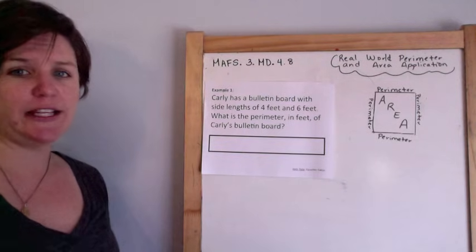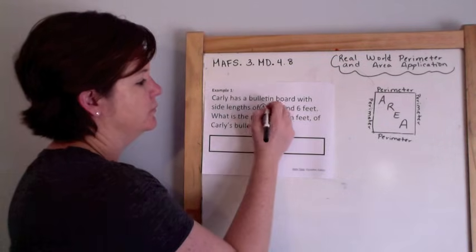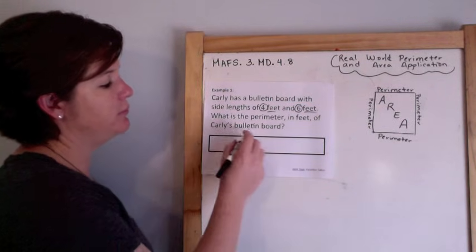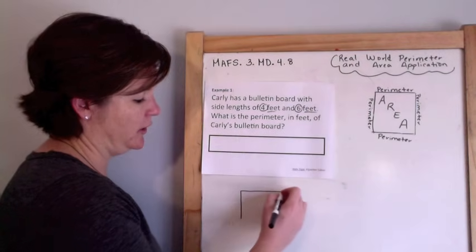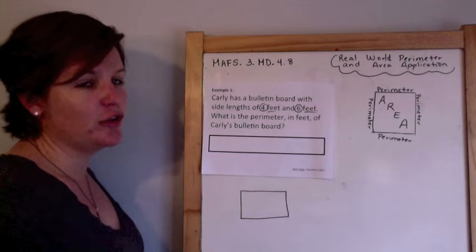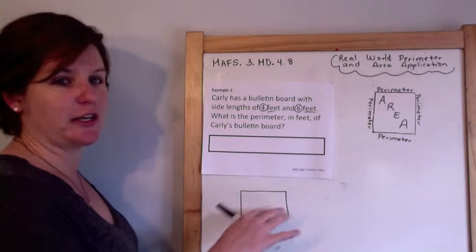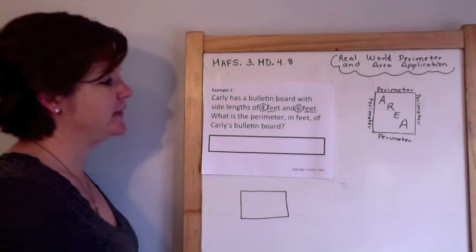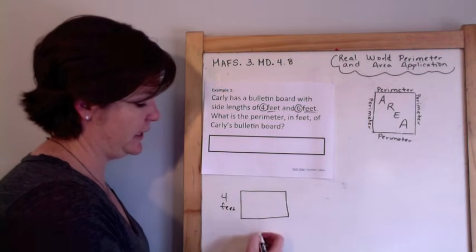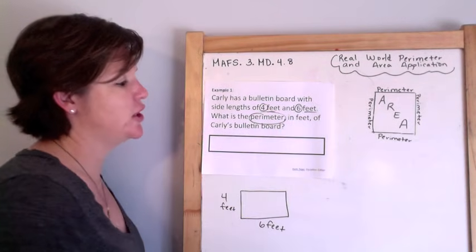Example 1. Carly has a bulletin board with side lengths of 4 feet and 6 feet. What is the perimeter in feet of the bulletin board? If you haven't seen a bulletin board, it's the thing that people post paper up on, or teachers will decorate outside of their classrooms. So, 4 feet and 6 feet — what is the perimeter?